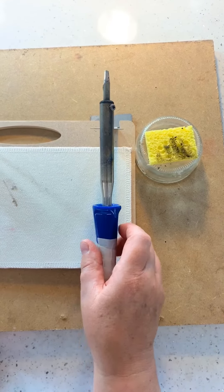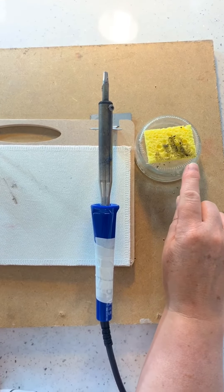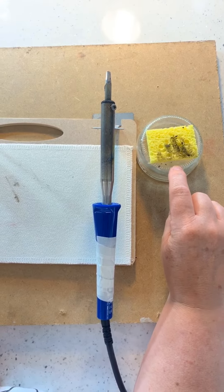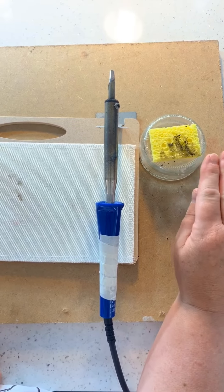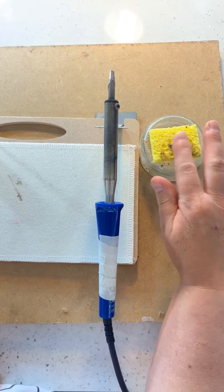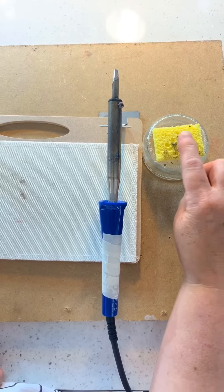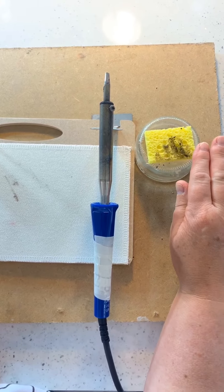Now the sponge, we actually use a man-made sponge. Don't use synthetic ones for kitchen because they will just melt. This is specially designed for this. So make sure you buy the proper sponge and it's just damp. You don't need it very wet.